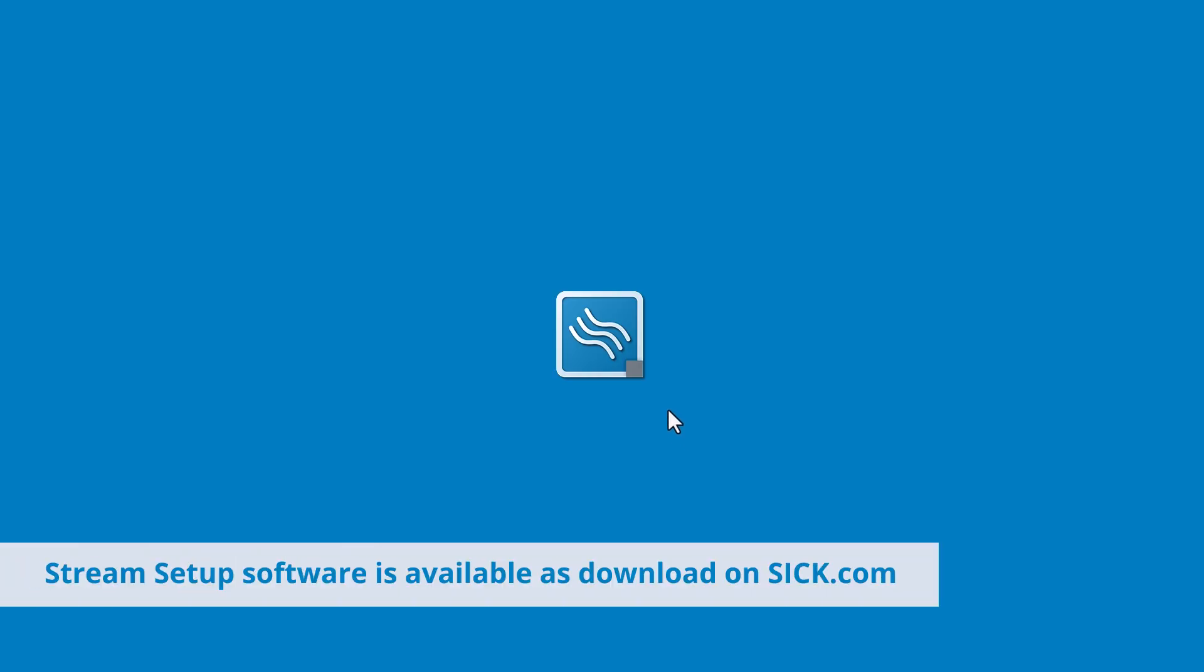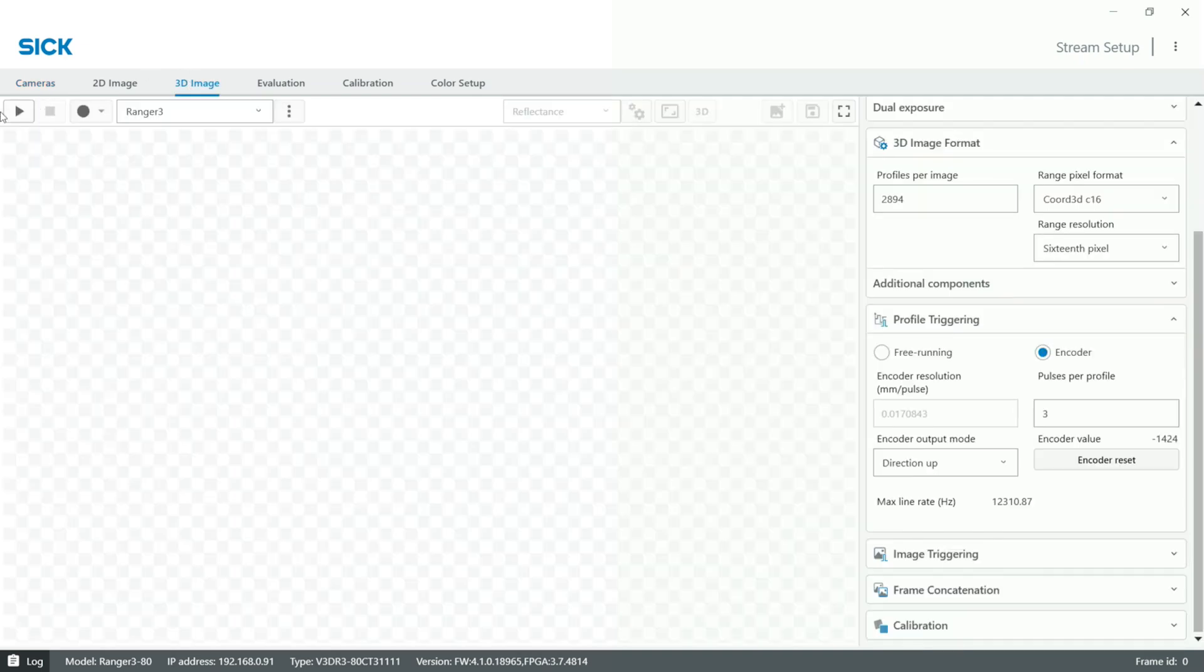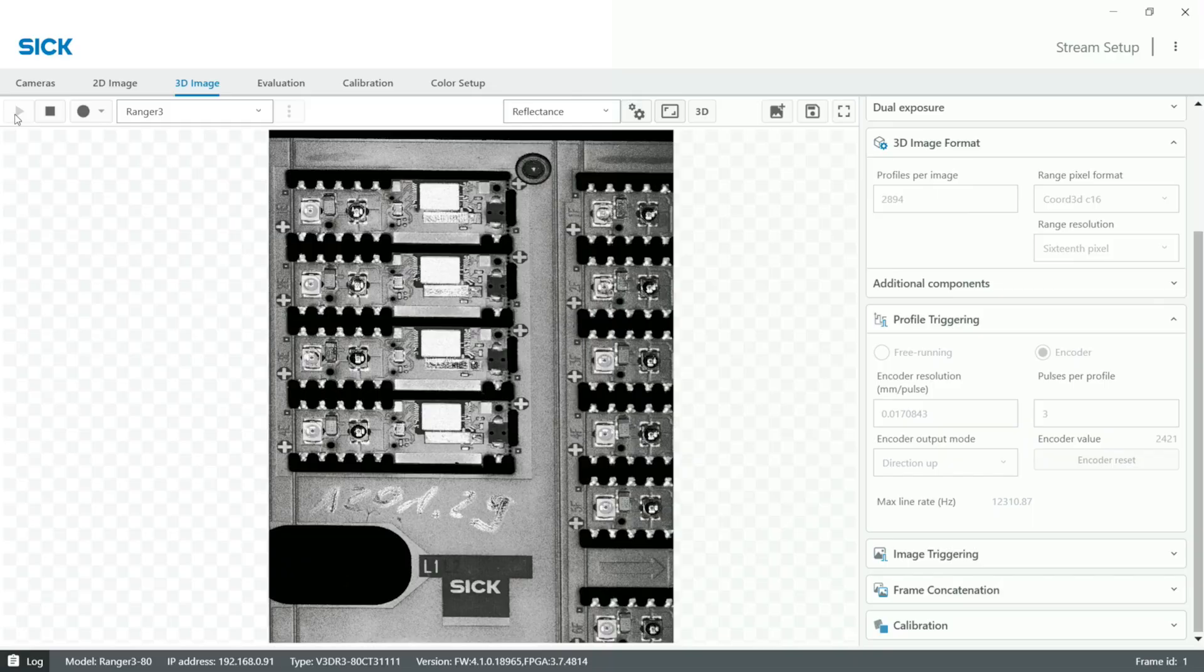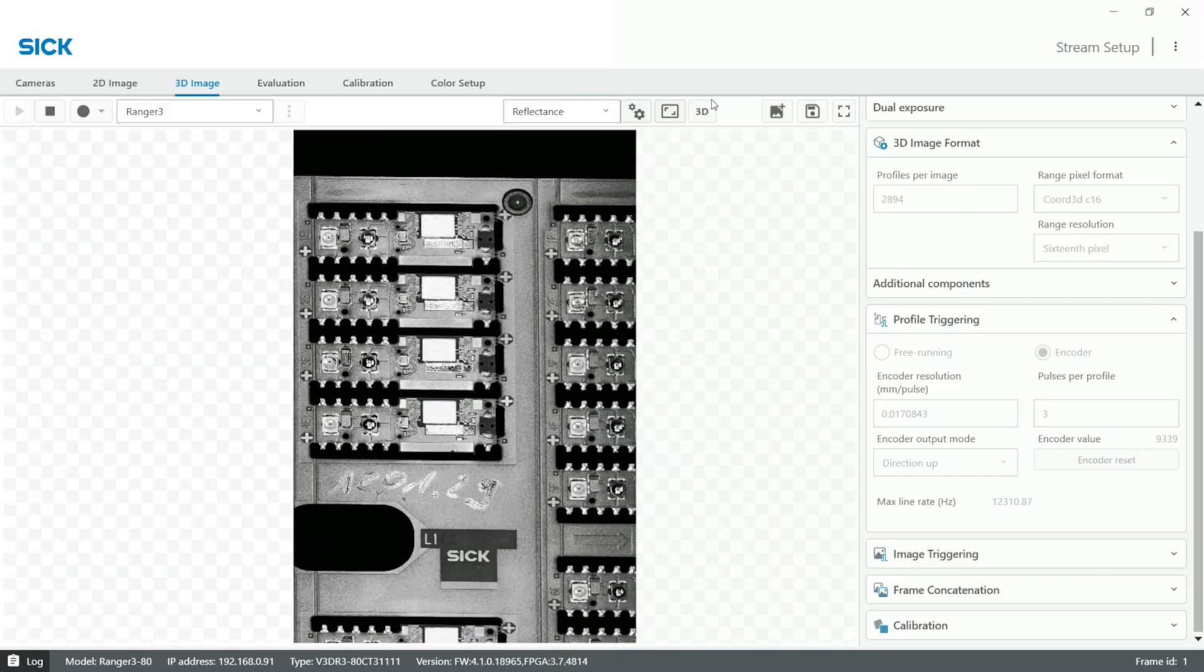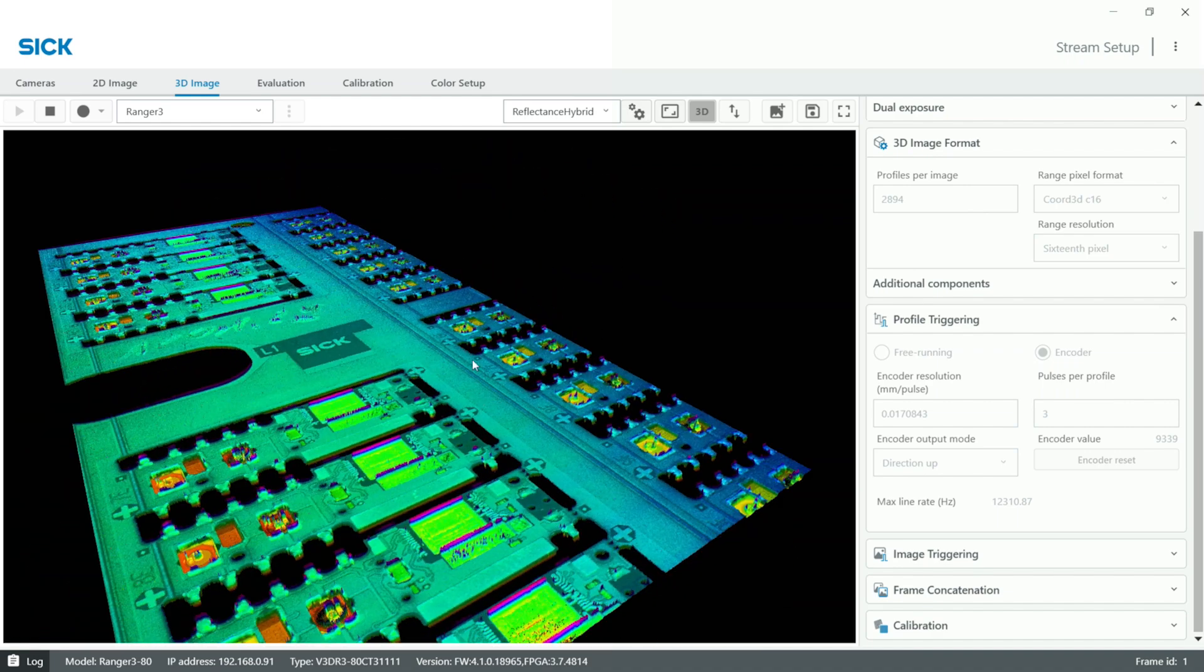To start, let us make a normal scan of the sample where the color component hasn't been enabled yet. As you can see, we get a good 3D image where we can do some volume measurements.